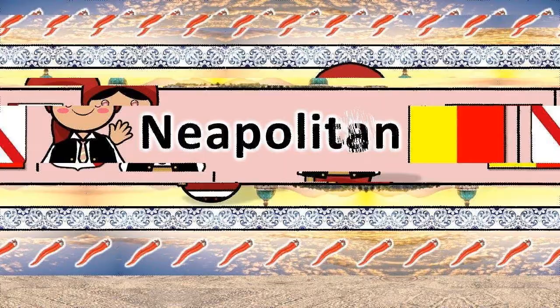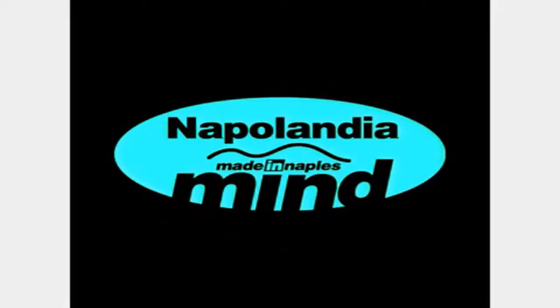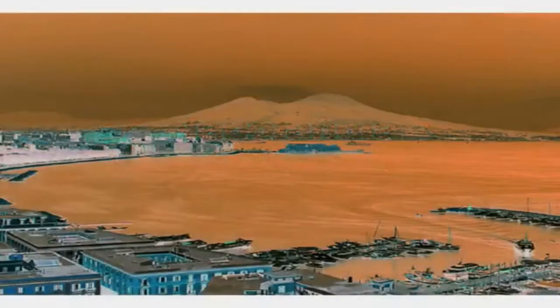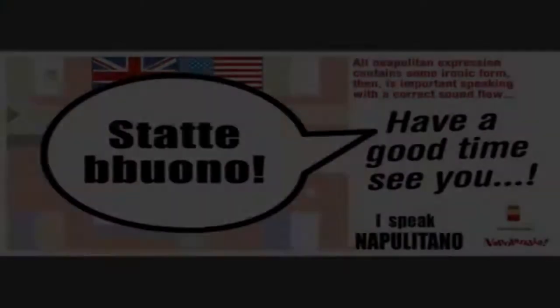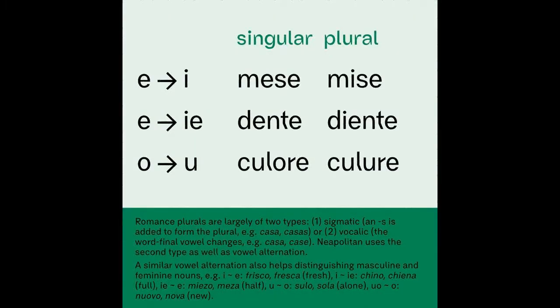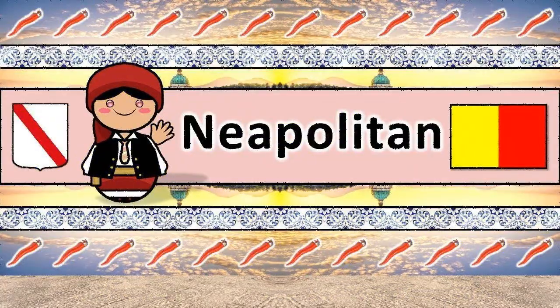Neapolitan is a Romance language and is generally considered part of the Italo-Romance branch of the Italo-Dalmatian languages. As in many other languages in the Italian peninsula, Neapolitan has an adstratum greatly influenced by other Romance languages, Germanic languages, and Greek.